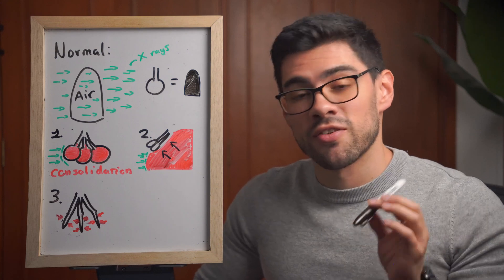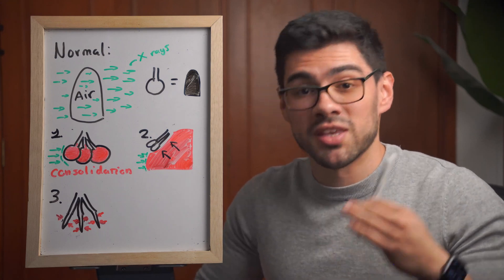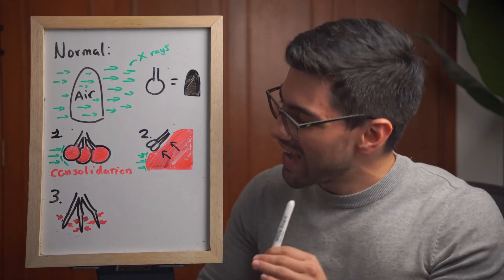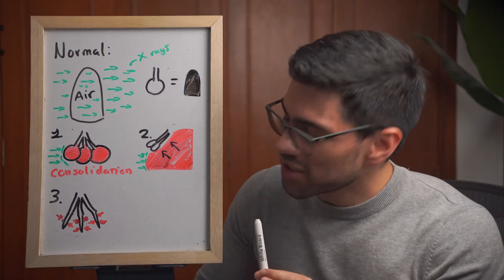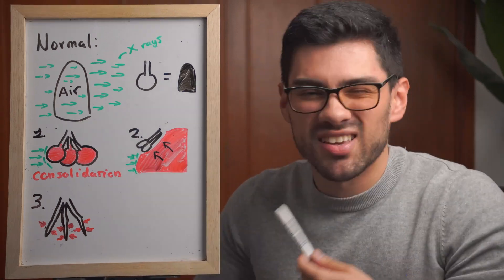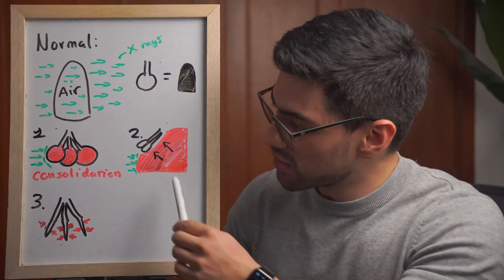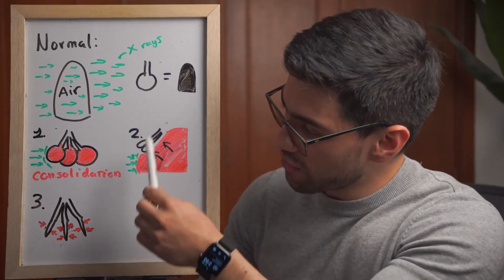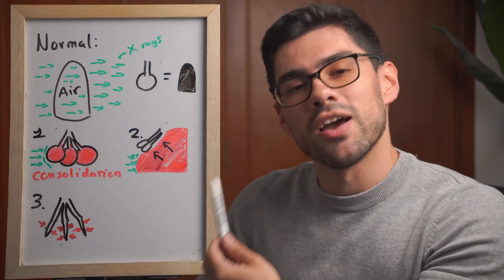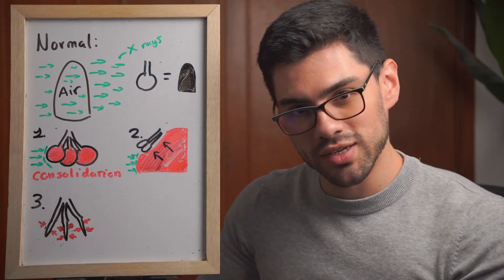The second option is that the thorax is being occupied by something dense that is actively pushing the alveoli into a corner, making the end result very similar — something dense in the thorax blocks the X-rays and you see the image as white.